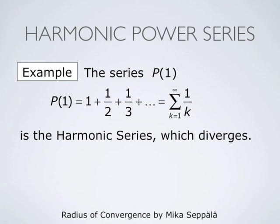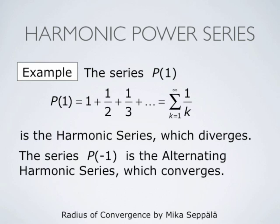If x equals 1, the power series becomes 1 plus 1/2 plus 1/3 plus and so forth, which is the harmonic series — this diverges. If x equals negative 1, the series becomes summation k from 1 to infinity of (-1)^k divided by k, which is the alternating harmonic series and this converges. Therefore at x equals 1 the series diverges, and at x equals negative 1 the series converges.